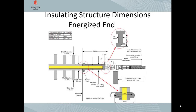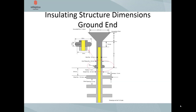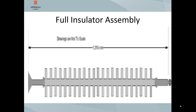This is the geometry defined in the report that will be used in the analysis. This slide shows the geometry for the energized end of the insulation string. Note that we will also be looking at the results with a corona ring at the energized end. This is the geometry defined for the ground end, and finally the full view of the insulation string as defined in that report.